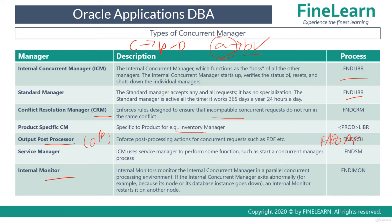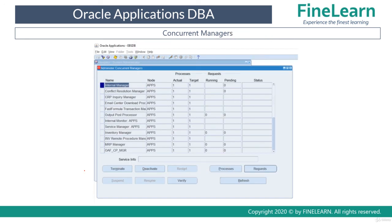This multi-node scenario is called Parallel Concurrent Processing, also known as PCP. In such environments, the Internal Monitor runs on each node and determines whether the ICM or concurrent processing is running properly. In the Administer screen, which we have seen in a previous lesson, you can check the status of all the managers, and what you should always observe is the actual and target process counts.